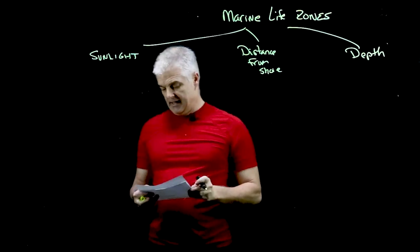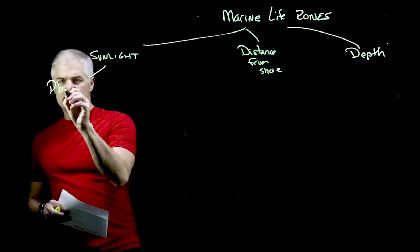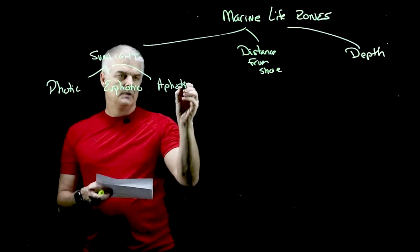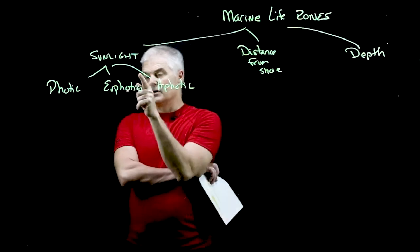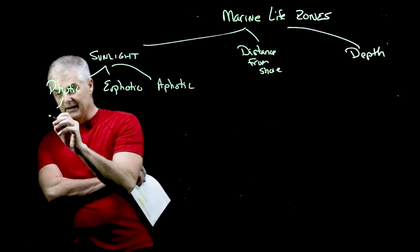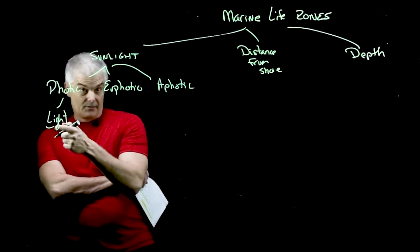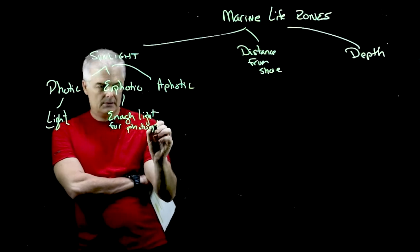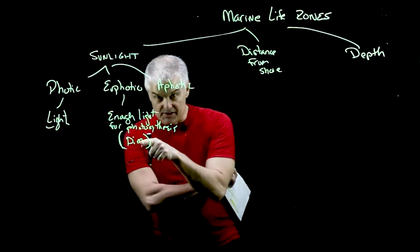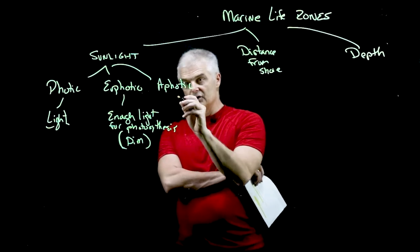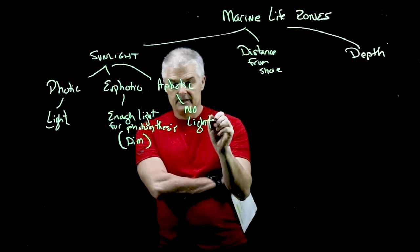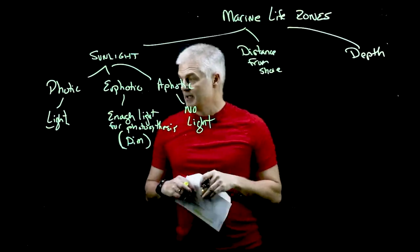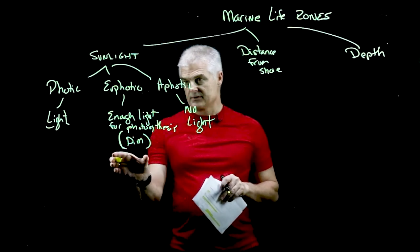In the sunlight category, we talk about three levels: photic, euphotic, and aphotic. Photic means lots of light — that's the surface of the ocean. Euphotic means enough light for photosynthesis — this is the dim part of the ocean. And aphotic means no light at all. So from the perspective of light, you've got full light, some light, and no light.